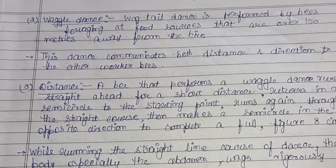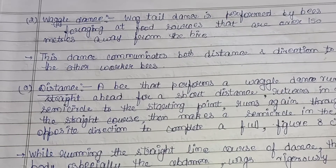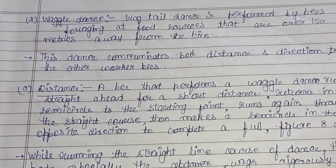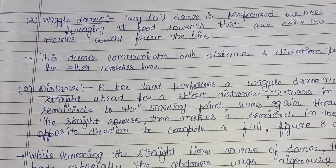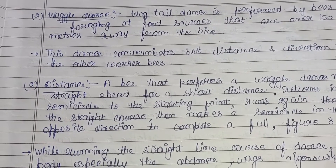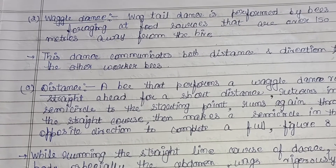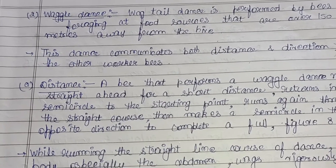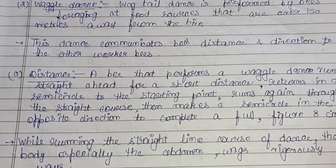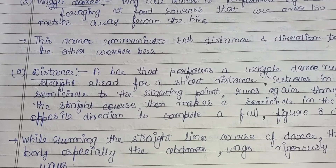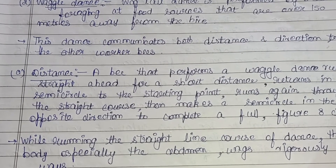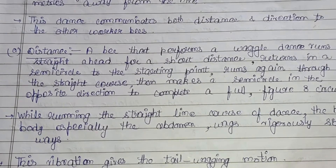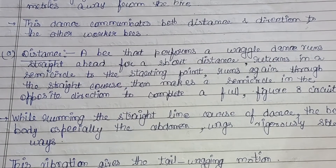The second dance performed by honeybees is the waggle dance. The waggle dance is performed by foraging bees when food sources are over 150 meters away from the hive. Unlike the round dance, this dance communicates both distance and direction to the other worker bees.